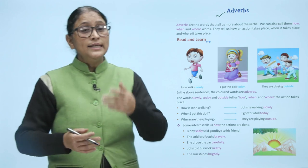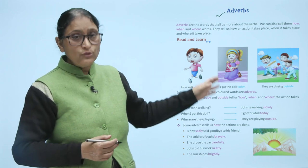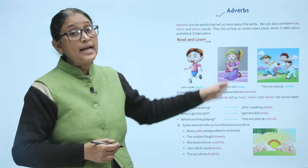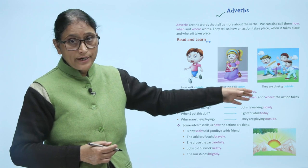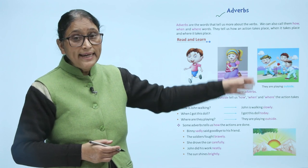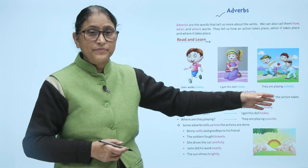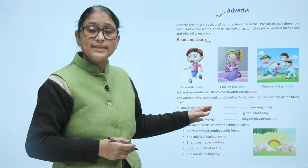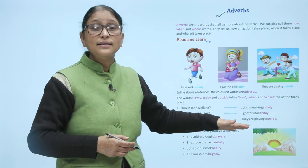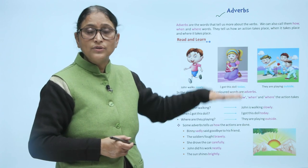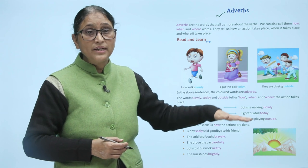Now read and learn. John walks slowly. I got this doll today. They are playing outside. In the above sentences, the colored words are the adverbs. Jo colored words hai, wo kya hai? Adverbs hai.